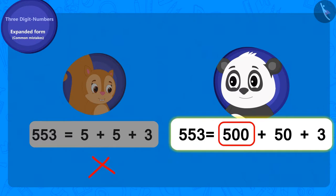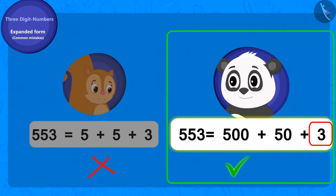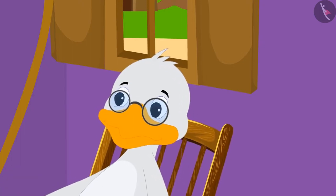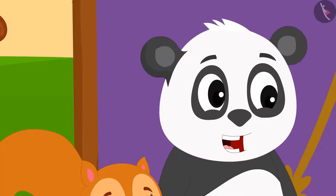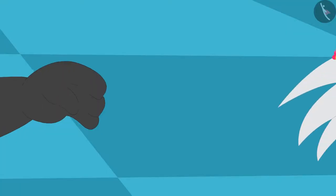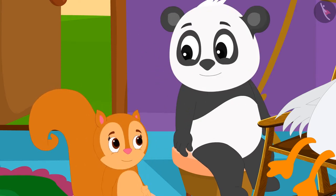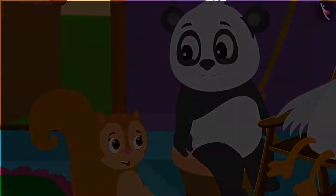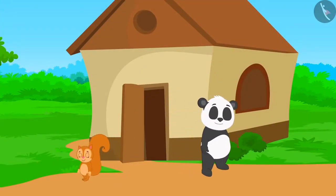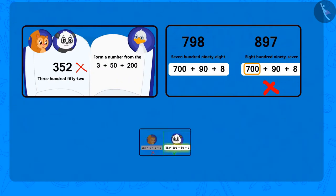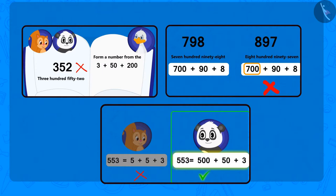Well done Golu, your answer is correct — here is your toffee, uncle said, and gave Golu a toffee. Golu gave half the toffee to Chanda and they ate it together before going home. Children, in this lesson we looked at some common mistakes related to writing the expanded form of three-digit numbers. Hope you will not repeat those mistakes.